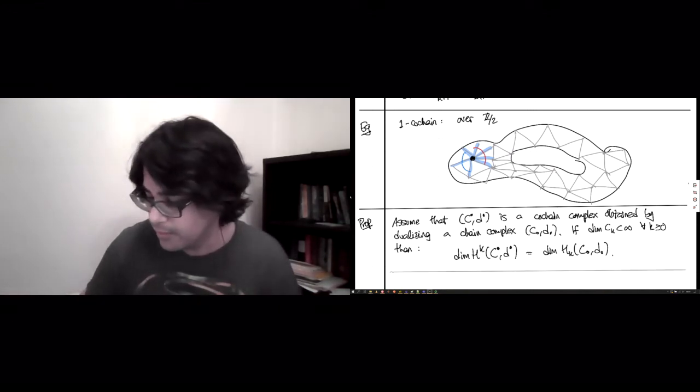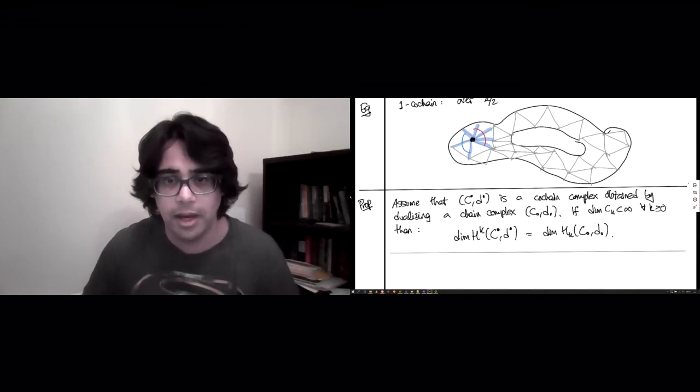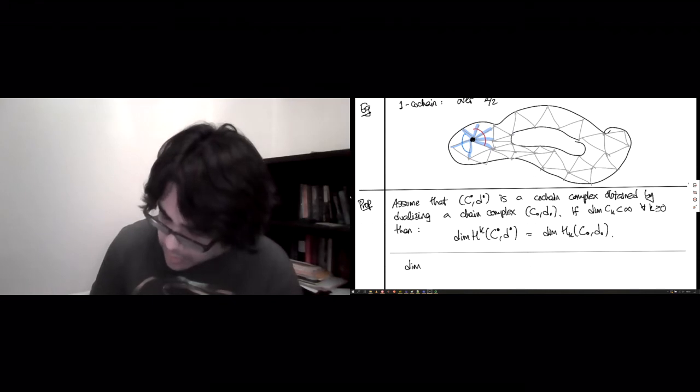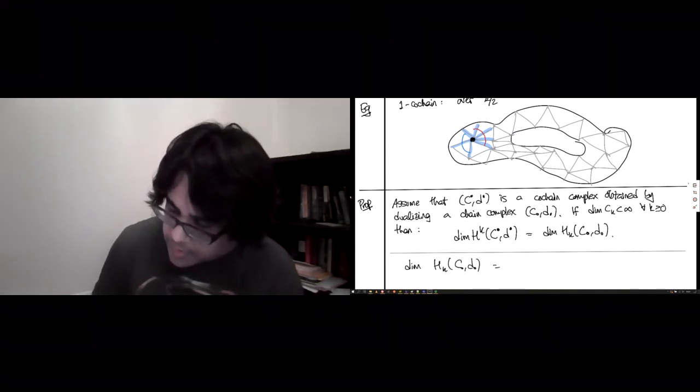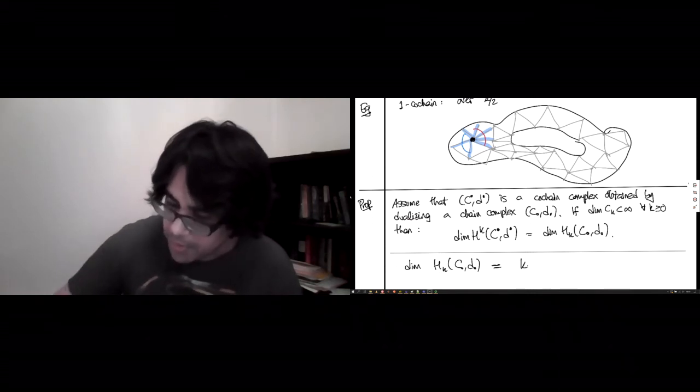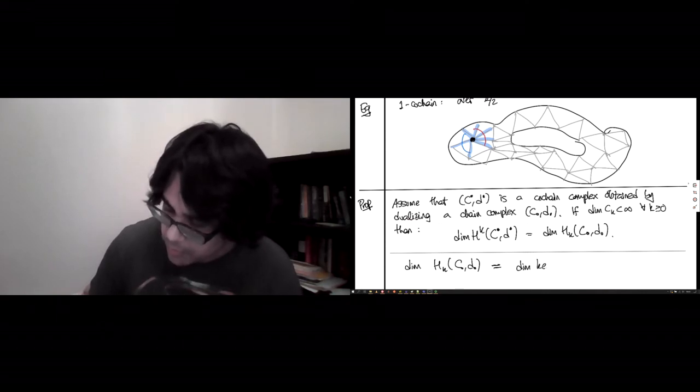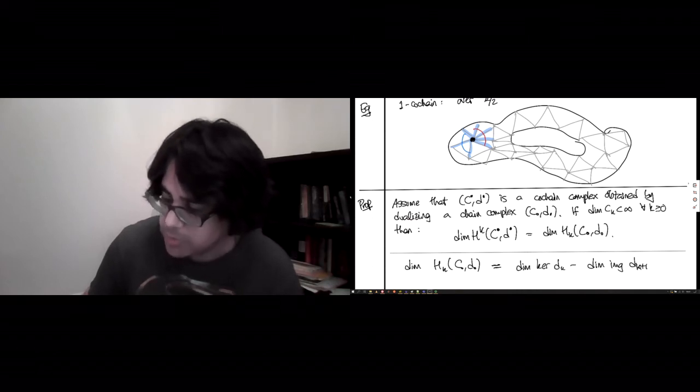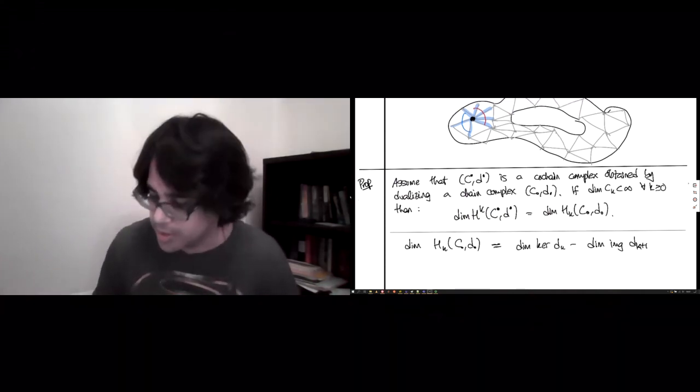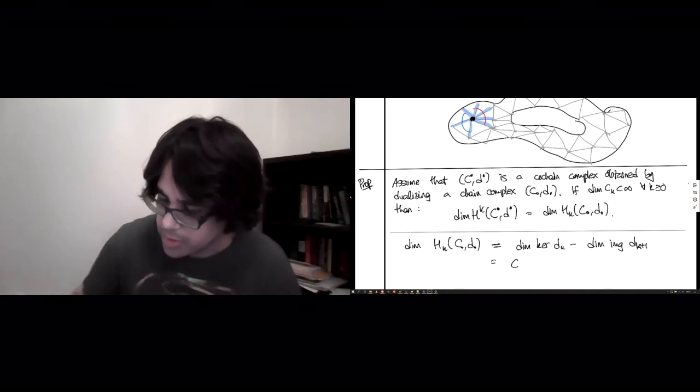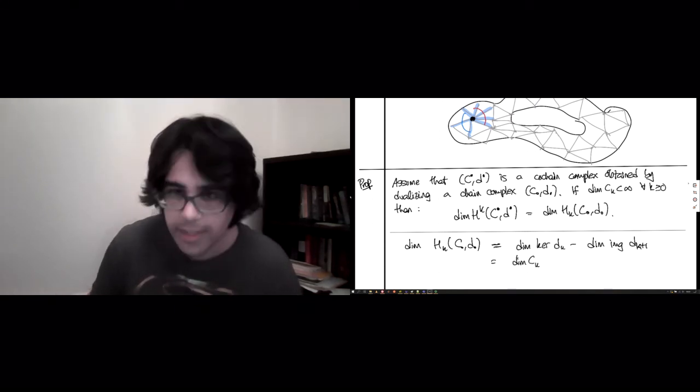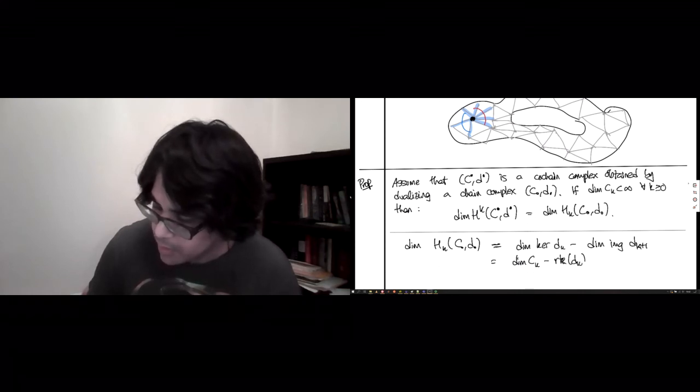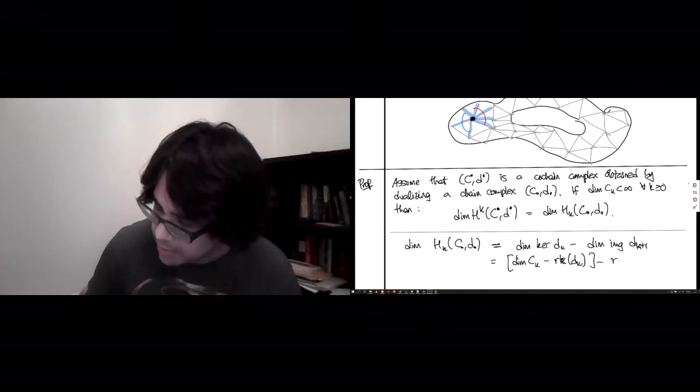It just takes into account the fact that the chain groups have the same dimensions and that the boundary maps are transposes of the co-boundary maps. So, let's start with homology because I guess we've known it for longer. The dimension of H_K is going to be the dimension of the kernel of D_K minus the dimension of the image of D_{K+1}, the K plus 1 boundary map. So far, we haven't done any co-homology, we're just looking at the homology. And of course, this is the dimension of the chain group. And now you see why we wanted this to be finite. I don't want anything to blow up and be infinite. So, the dimension of C_K minus the rank of this map D_K. And then minus, this is again the rank of D_{K+1}.